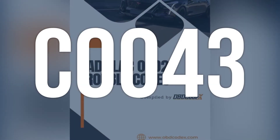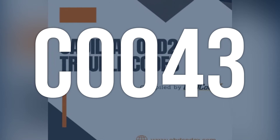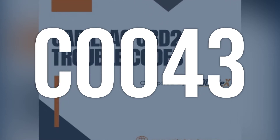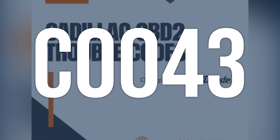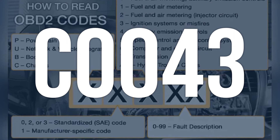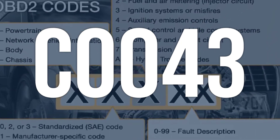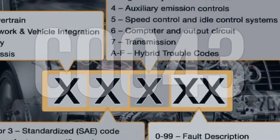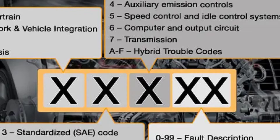OBD2 code C0043 means there is a problem with the brake pedal position sensor, circuit B, subfault. This sensor is responsible for detecting the position of the brake pedal and sending that information to the vehicle's computer.